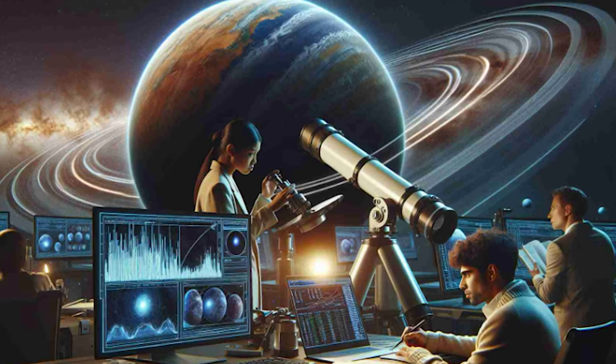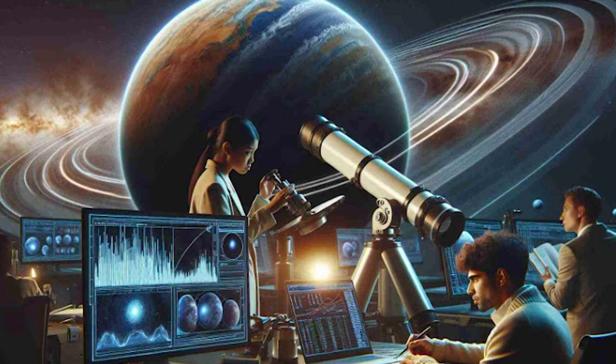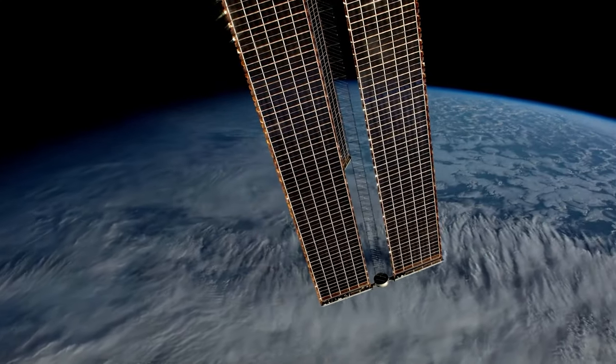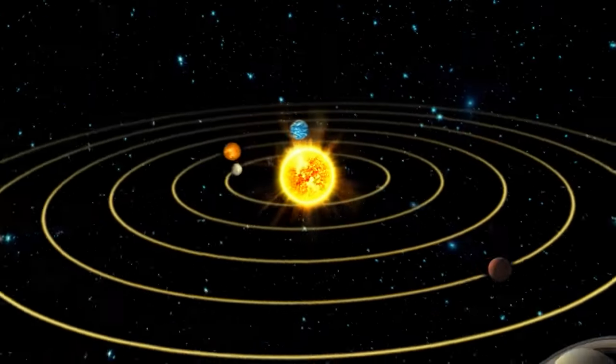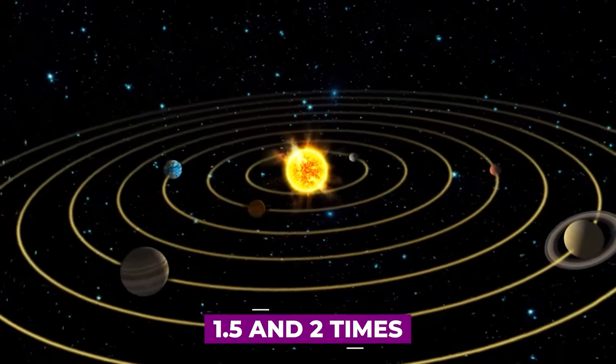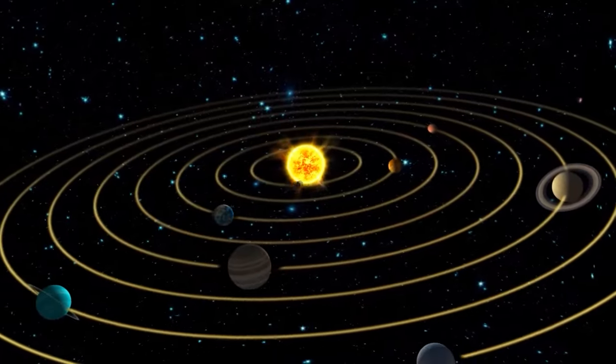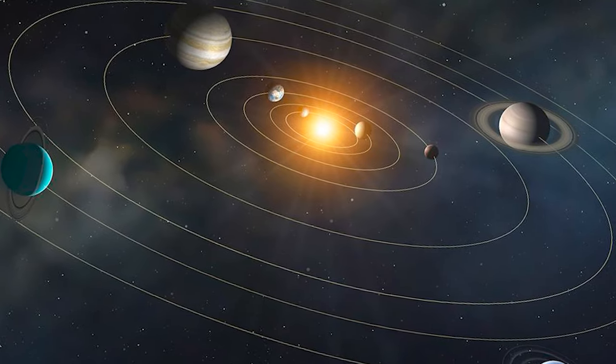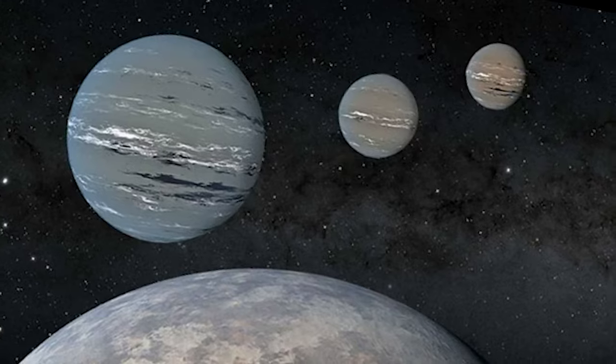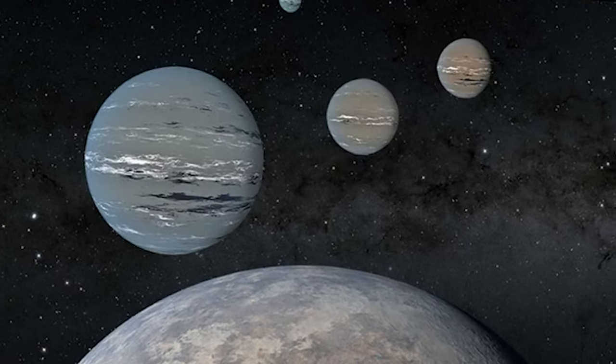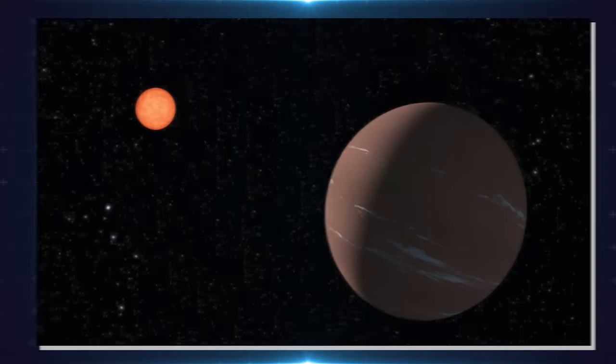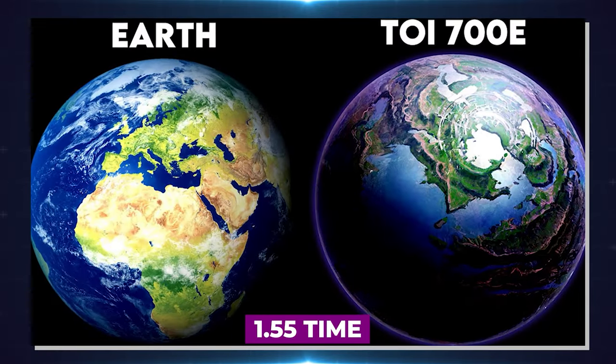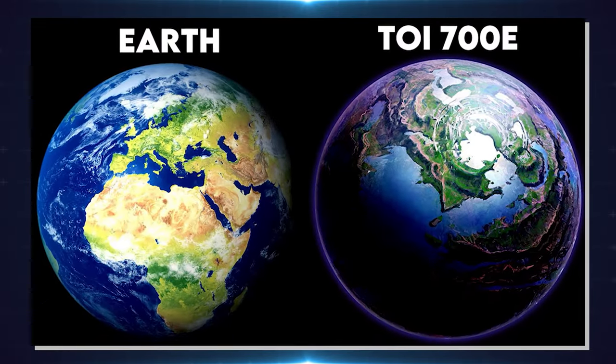As astronomers continue to uncover more exoplanets, they're noticing patterns among them. One interesting finding is a gap in the population of small planets, particularly those with sizes between 1.5 and 2 times that of Earth. This gap, often referred to as the Small Planet Radius Gap or Sub-Neptune Radius Gap, is also known by other names such as the Fulton Gap and the Photoevaporation Valley. Interestingly, TOI-715b, with a radius of 1.5 times that of Earth, falls right within this gap.